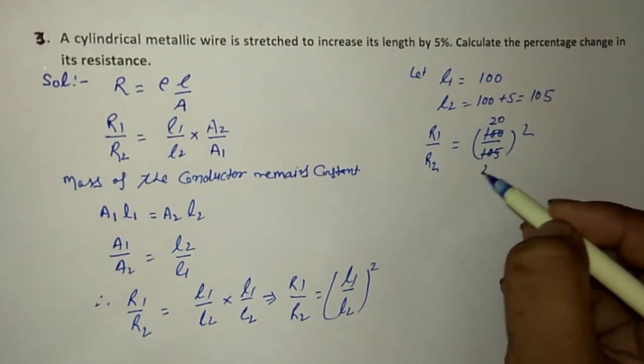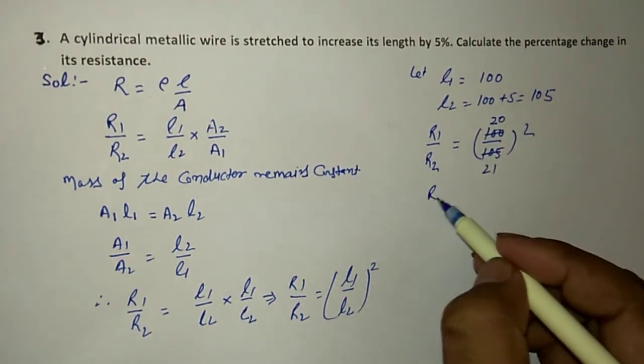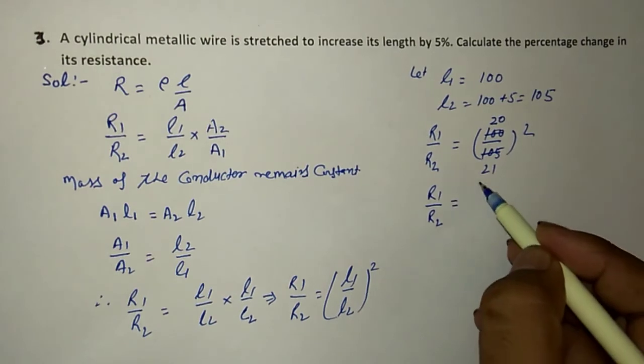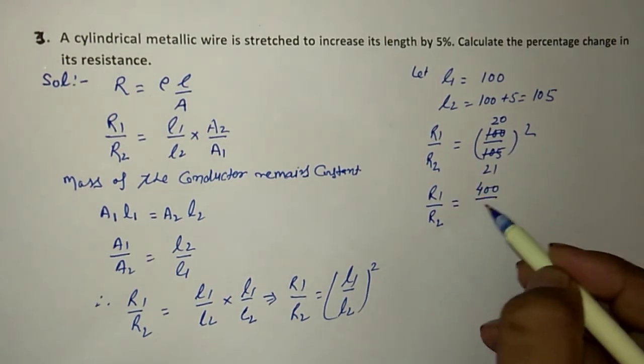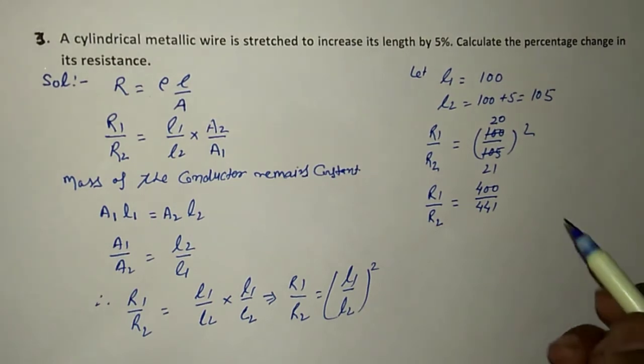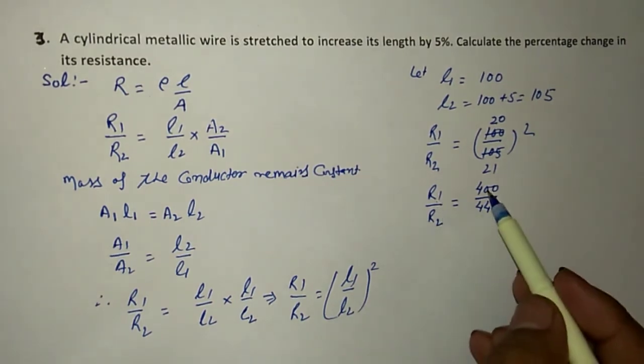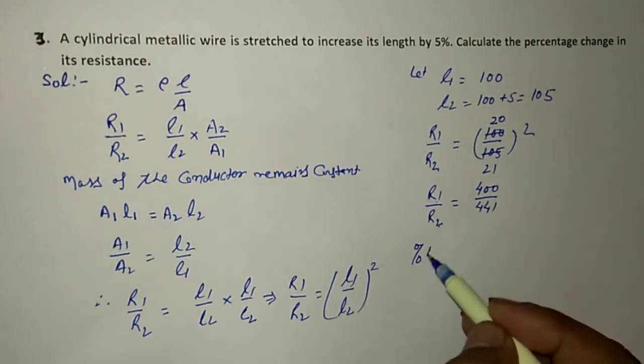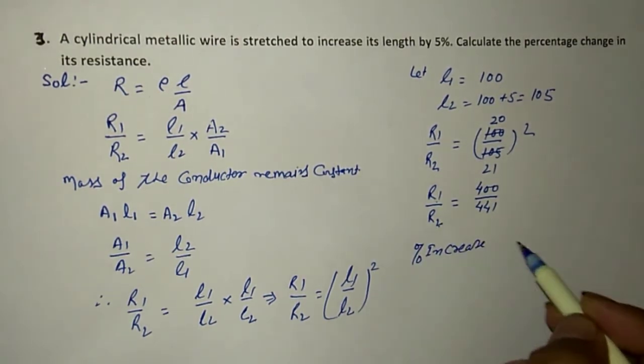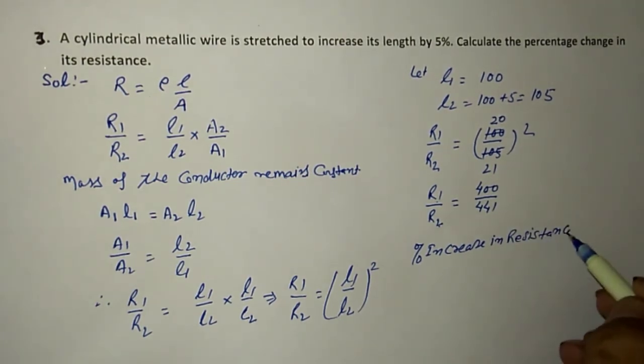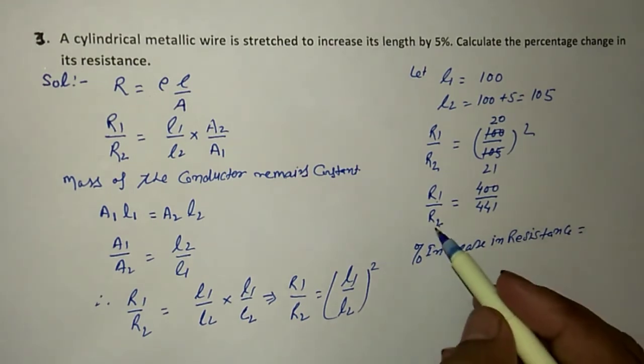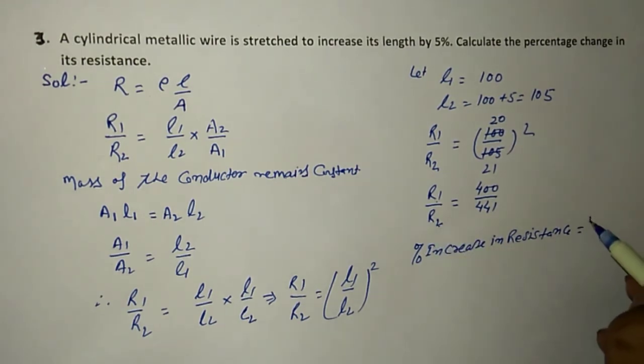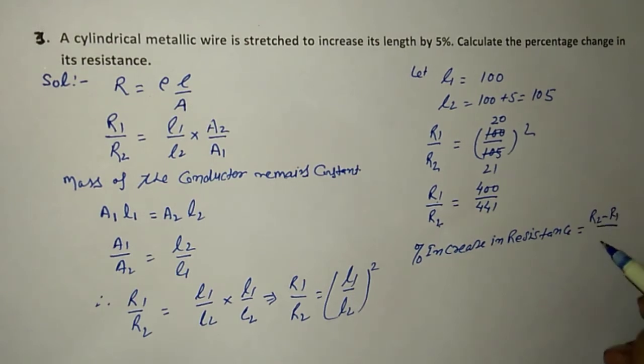R1/R2 = 400/441. When R1 is 400, then R2 is 441. Percentage increase in resistance equals (R2 - R1)/R1 × 100.